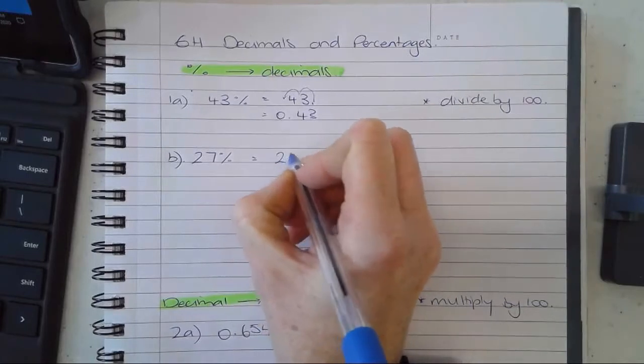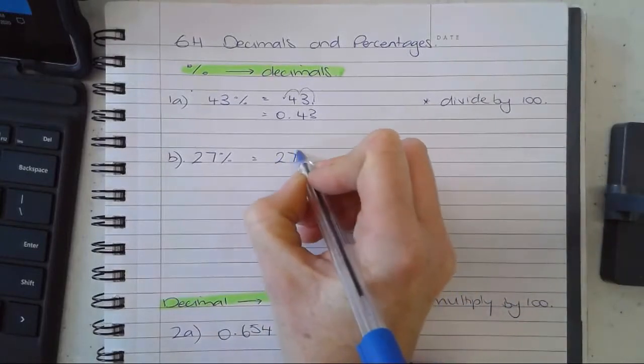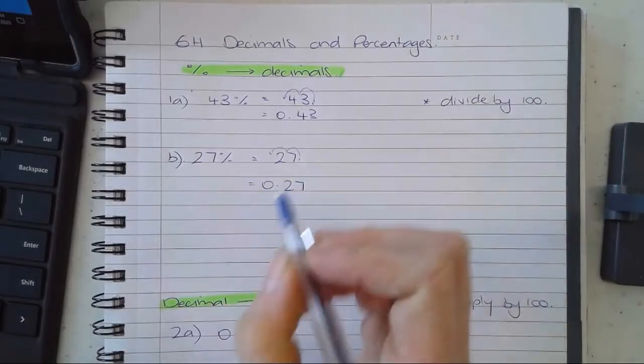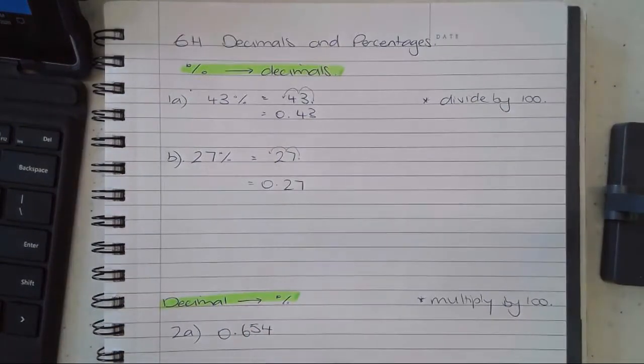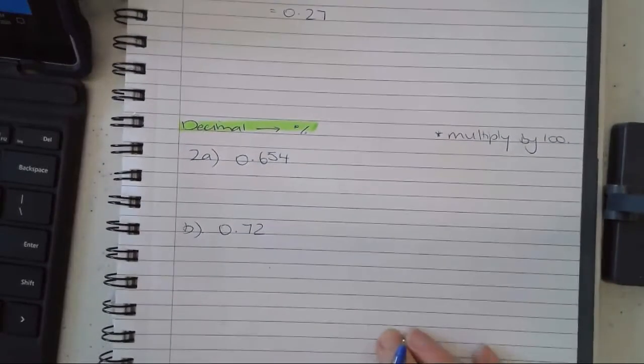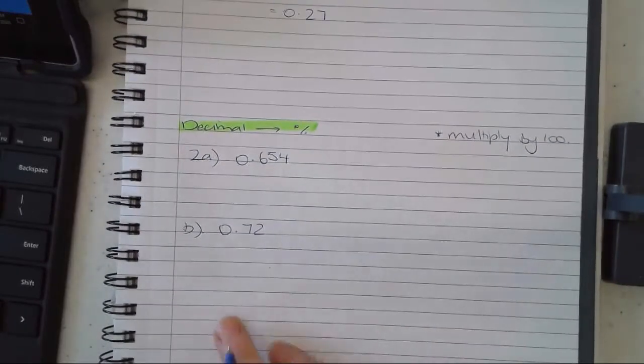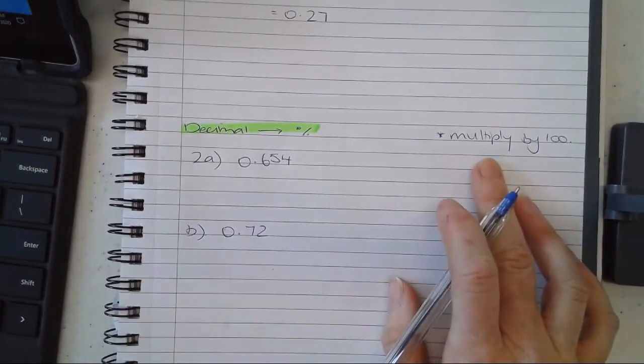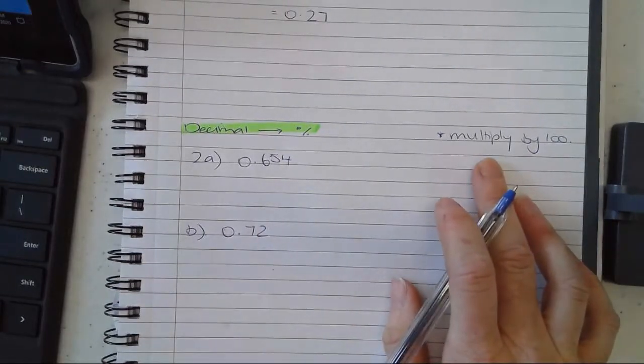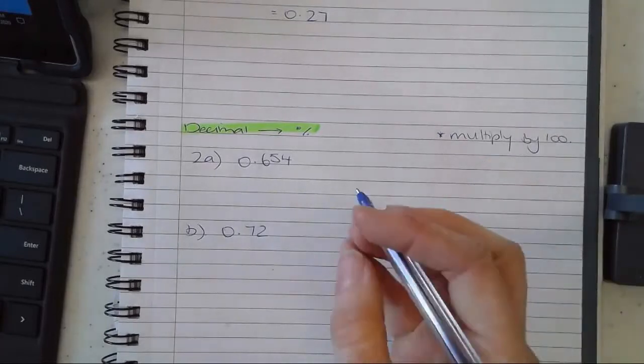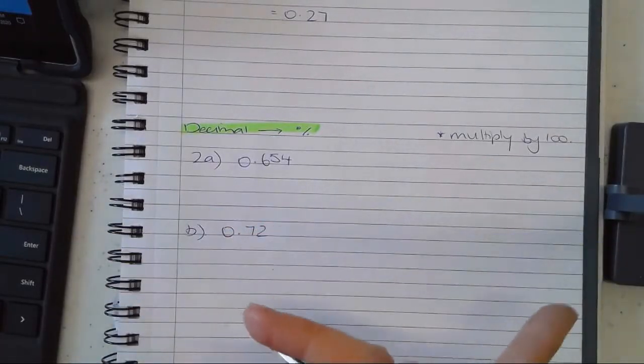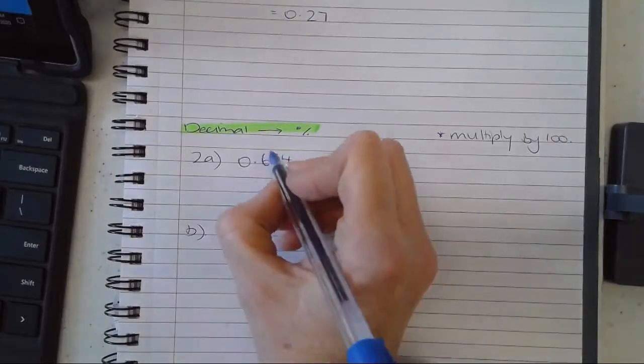Dividing by 100: 1, 2: 0.27. Really straightforward. If I'm going the other way - from a decimal to a percentage - I'm going to multiply by 100. It's essentially the same process, but remember when we're multiplying, our decimal point is going to move to the right.